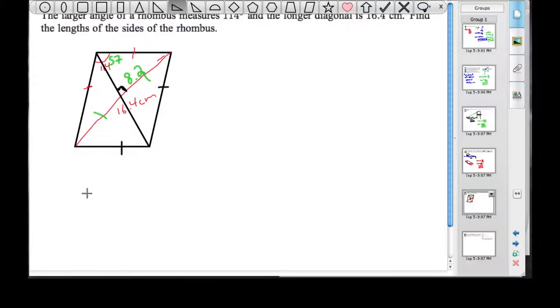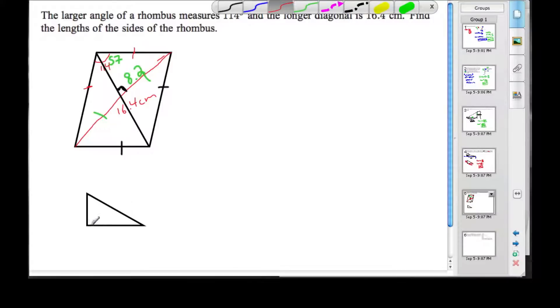So this triangle here is what I'm drawing. So here is 8.2, this angle here is 57, this angle here, well we don't need it. What we're looking for is to find the length of the side, so we want this length here.